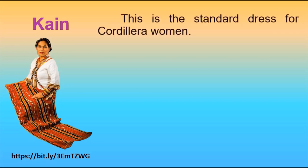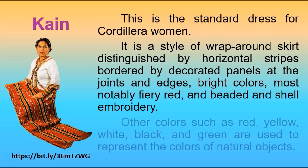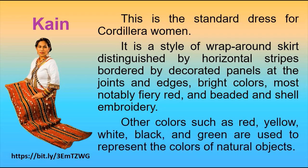Kain is the standard dress for Cordillera women. It is a style of wraparound skirt distinguished by horizontal stripes bordered by decorated panels at the joints and edges. Bright colors, most notably red, are accented with beaded and shell embroidery. Other colors such as red, yellow, white, black, and green are used to represent the colors of natural objects.